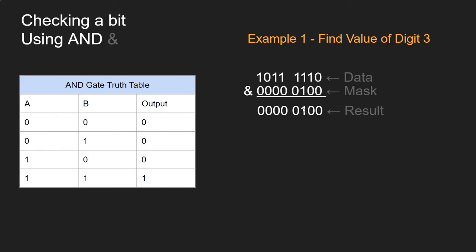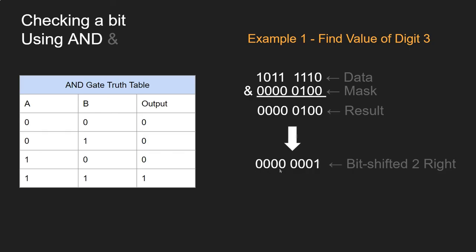So we know, because digit 3 in the result is a 1 and not a 0, that the value of digit 3 is 1. What we would actually do with that number is perform a binary shift 3 places to the right, because it's the third digit, and that gets the 1 into the rightmost position, which we can then use as true or false.